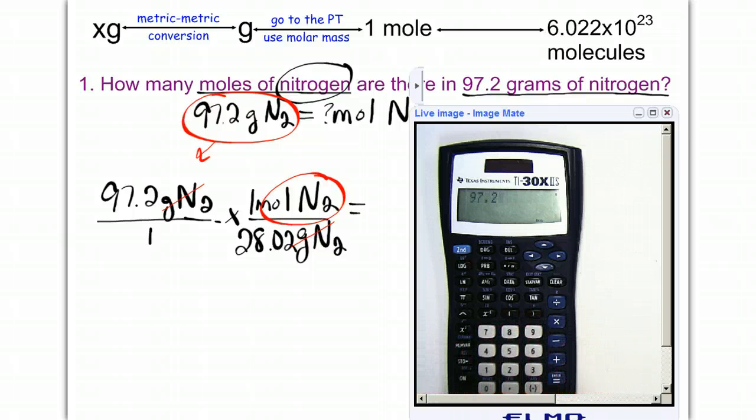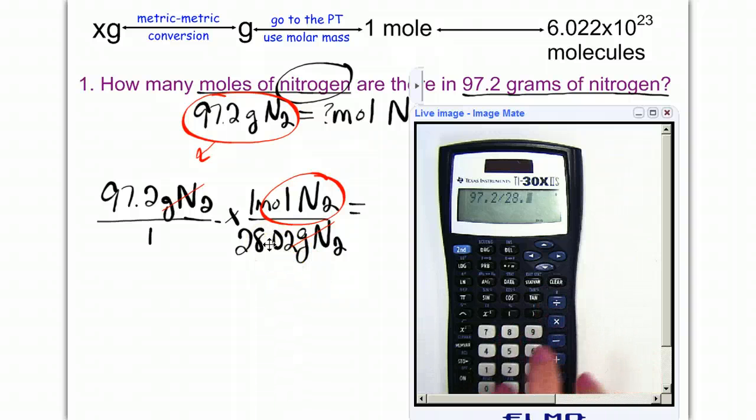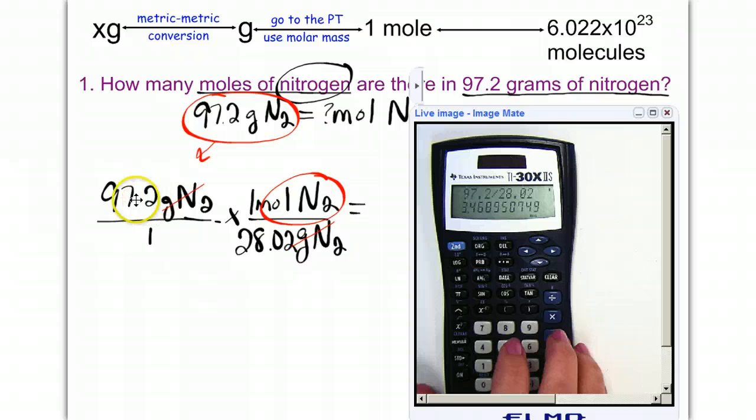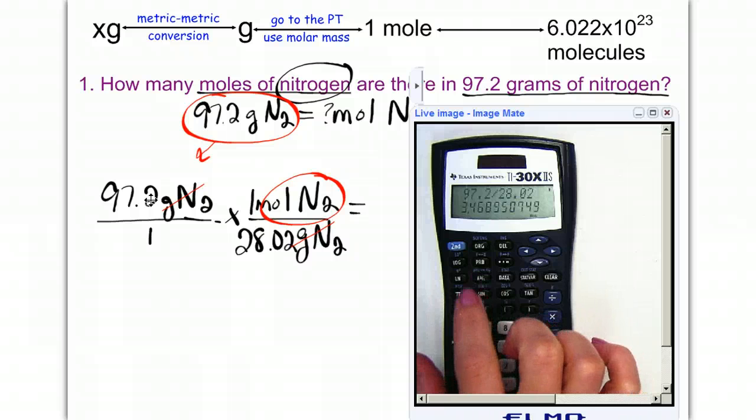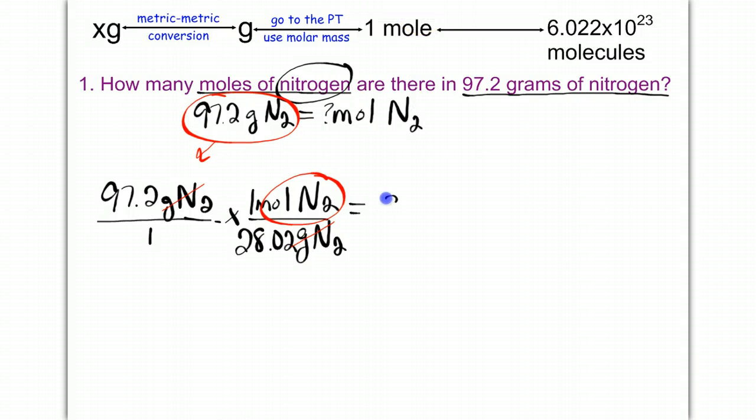So let's calculate our answer. We're going to have 97.2. And because my 28.02 grams is in the denominator at the bottom, right here, I'm going to hit divided by 28.02. And that's going to give me this long number. And I want to do sig figs. Because my starting number is only 3 sigs, I want to round this off to only be 3 sig figs as well. So that answer in the proper sig figs would be 3.47. So my final answer should be 3.47, and my unit is moles of nitrogen.